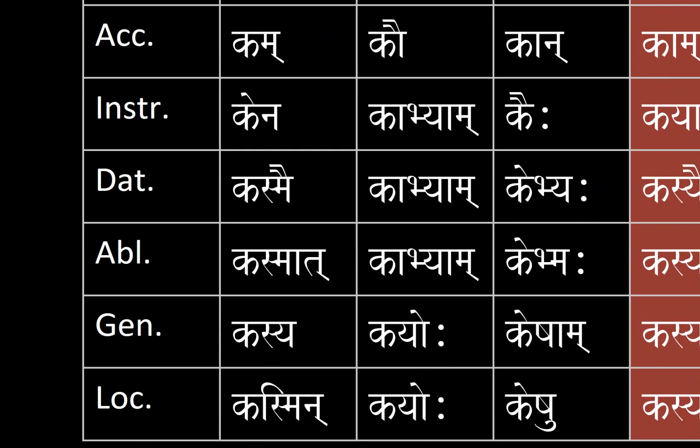For genitive singular, dual, and plural we have kasya, kayoḥ, and keṣām. And for locative we have kasmin, kayoḥ, and keṣu.